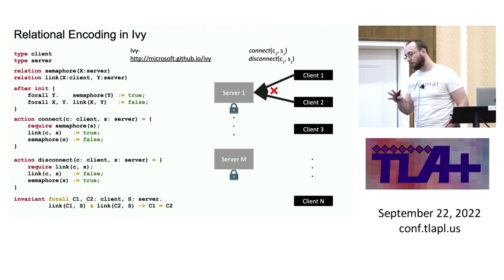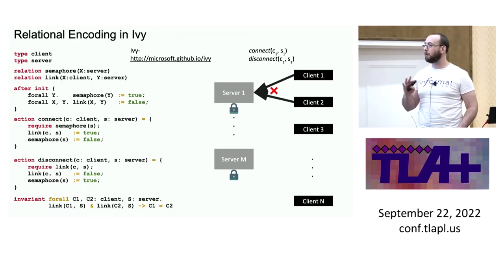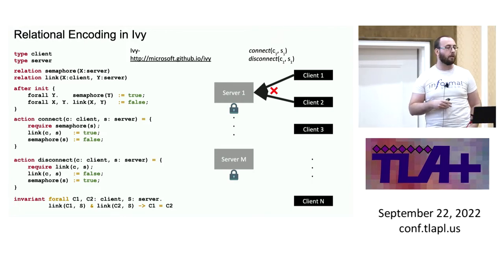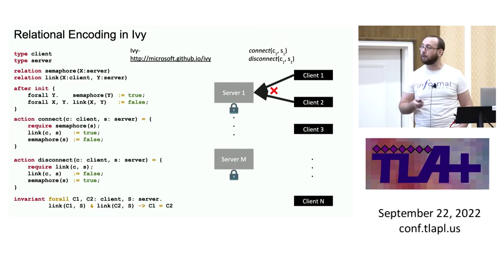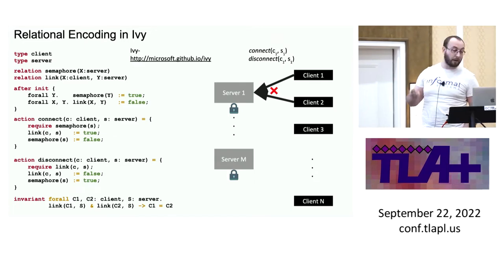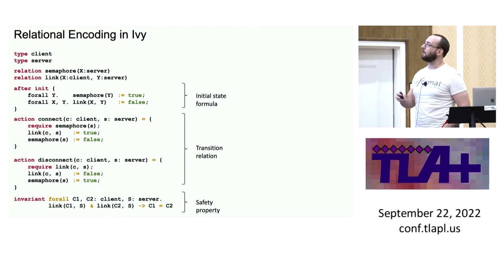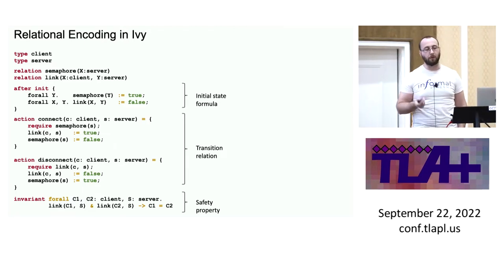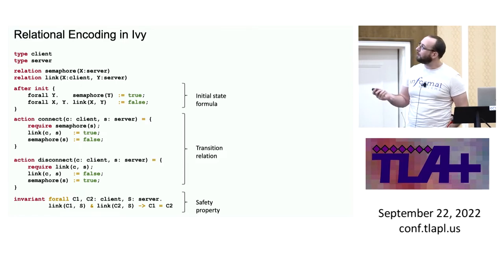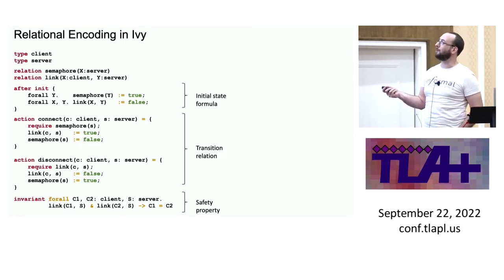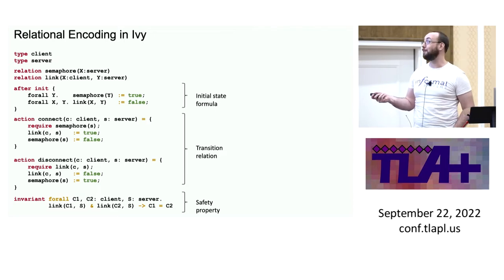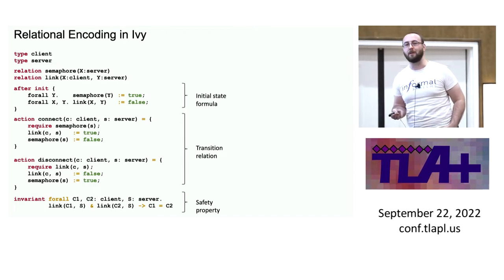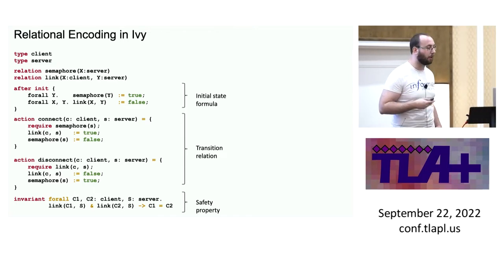For a moment, let's forget about TLA. You can specify this in Ivy — you can write a relational encoding, which someone has already done for us. The important parts are that you have basically three components: an initial state, transitions, and properties. So the framework is actually very similar to TLA. It's just about the language fragment, the expressibility, and what you can do with it.